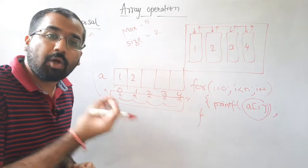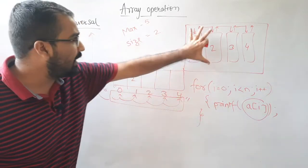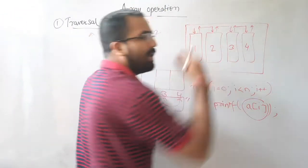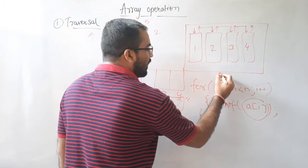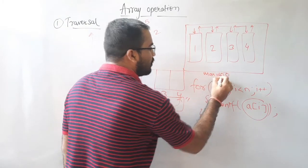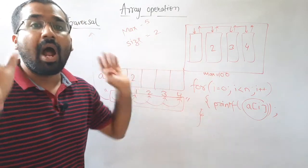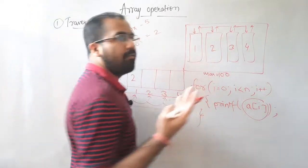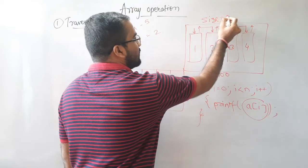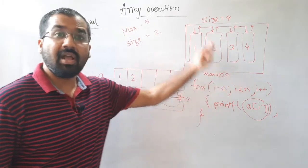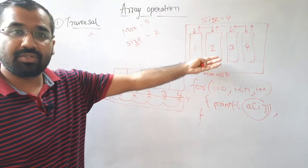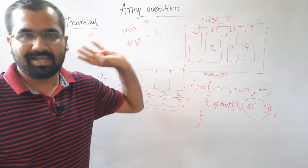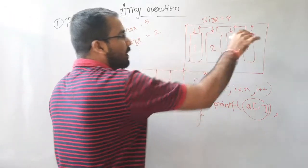The next question is: up till what point do we have to traverse? We can answer that using the real-life scenario. This is a very big land that can accommodate a maximum of 100 houses, so max equals 100. But right now only four houses are constructed, so size equals four. The remaining 96 houses can be constructed later.